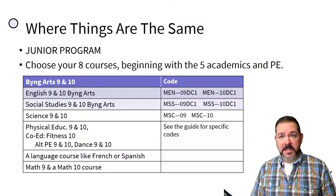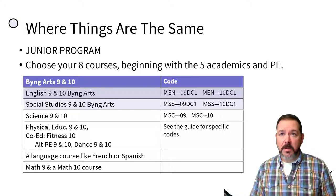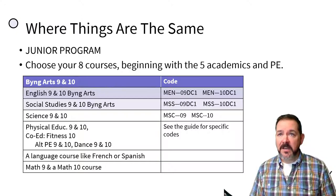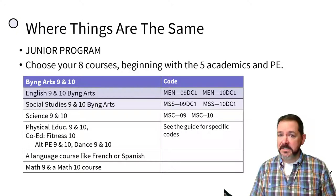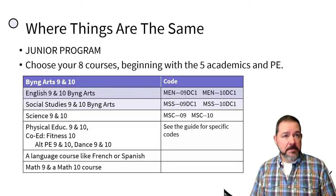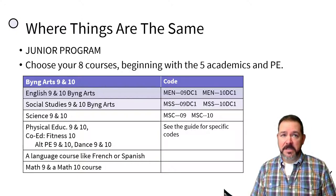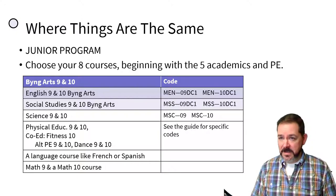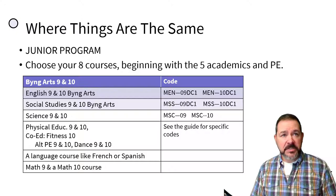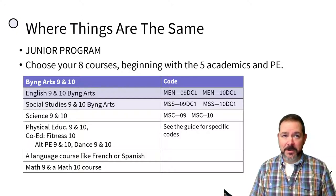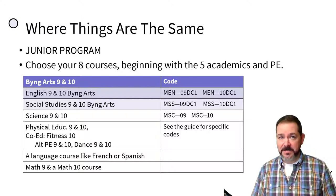So where are things the same? For the junior program, you're going to choose eight courses beginning with the five academic classes and PE. Specific to Bing Arts, English and Social Studies are your cohort classes — we want you to be in those classes with everyone else in your grade. Make sure you choose English Bing Arts and Social Studies Bing Arts for grade 9 and grade 10.